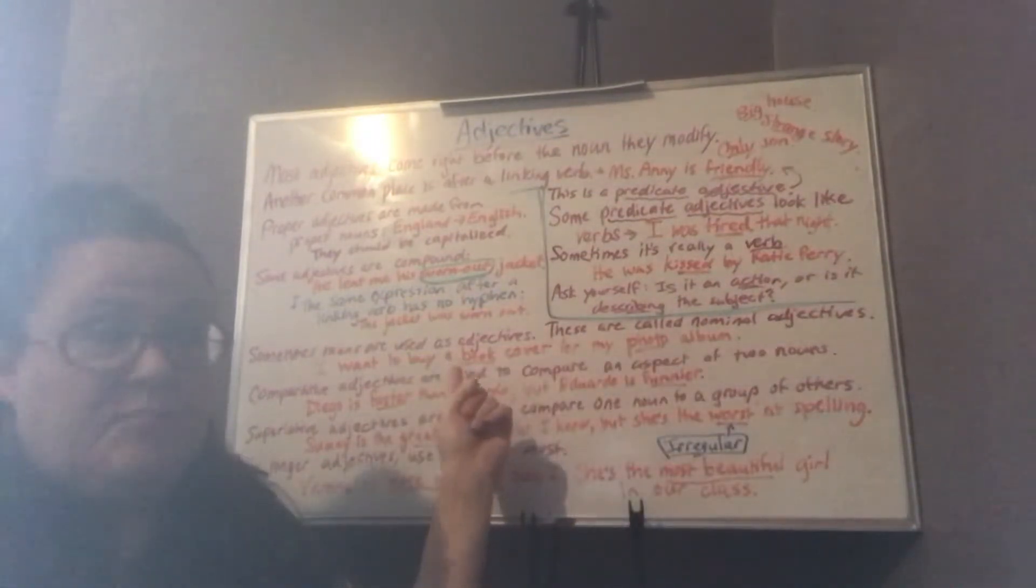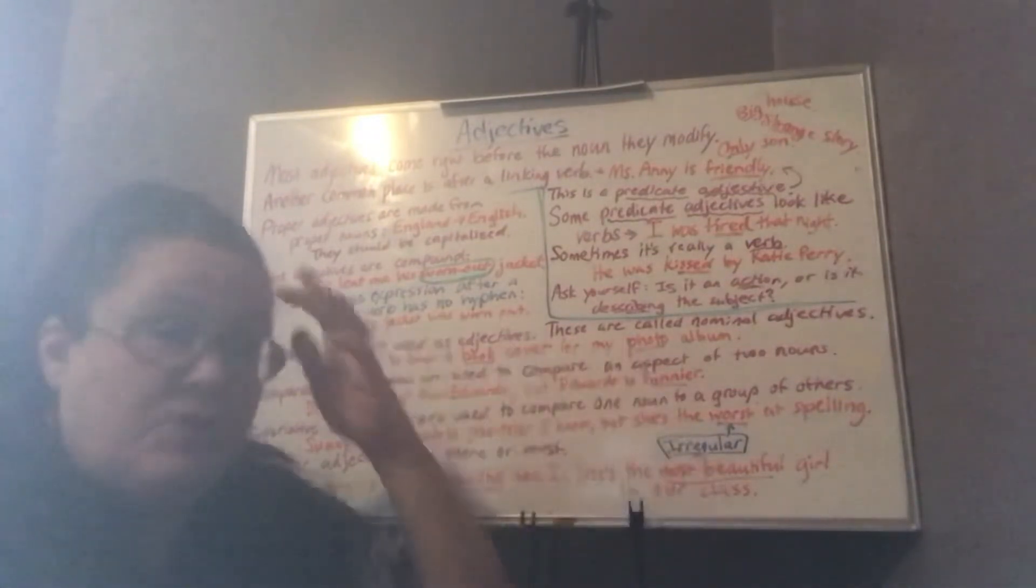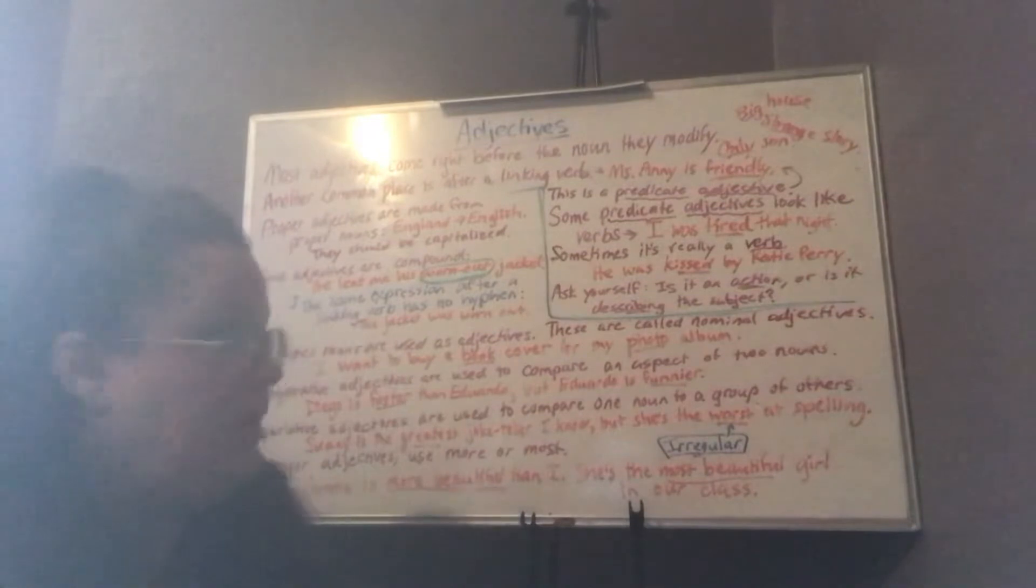Book is a noun, but in this sentence, it's an adjective. It's a nominal adjective. Same thing with photo. Photo is a noun, but here it's used to describe the album.